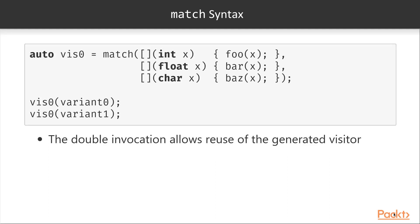An advantage of using a double invocation syntax is that it allows reuse of the generated visitor. Imagine that you want to use the same match visitor with multiple different variants at multiple call sites. What you can do is bind the visitor generated by the first call to some variable — in this case vis0 — and then reuse that with multiple variants later on.